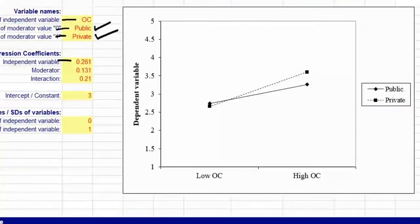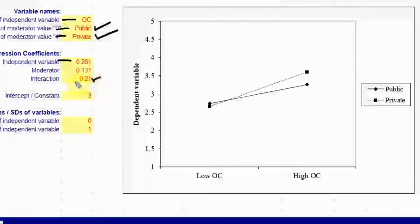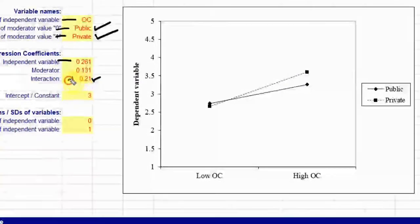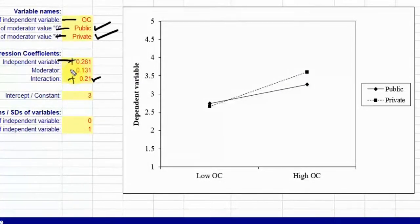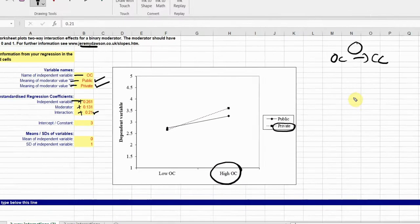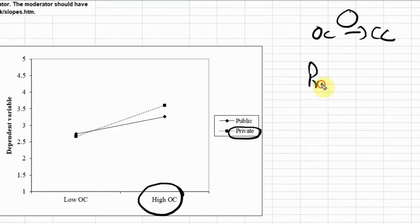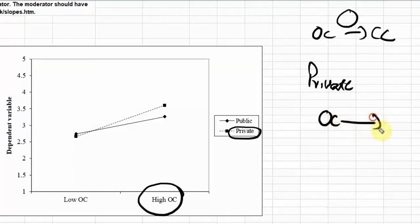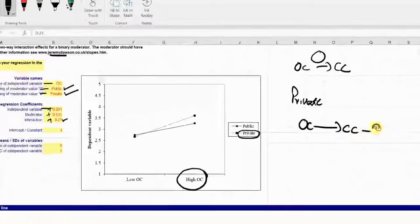How do you interpret this slope? The results are significant and the moderating effect is positive — both lines are positive. This means that private sector banks have a stronger relationship between OC and CC. In private sector banks, the relationship of organizational commitment with collaborative culture is stronger, and this is evident here as well.